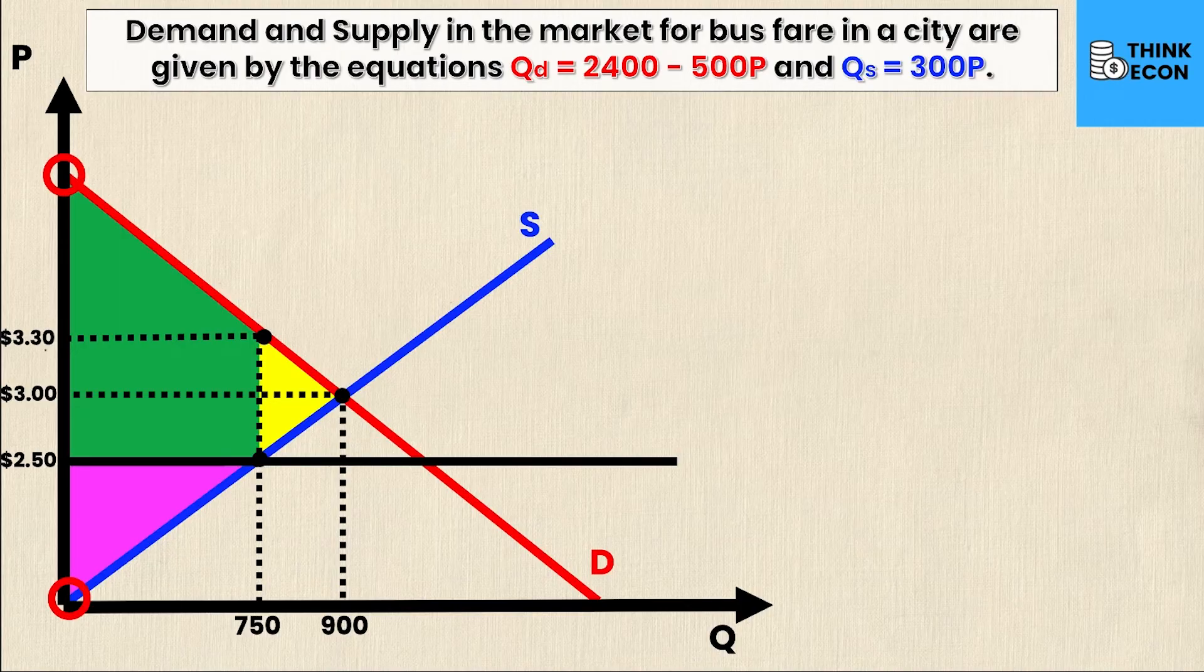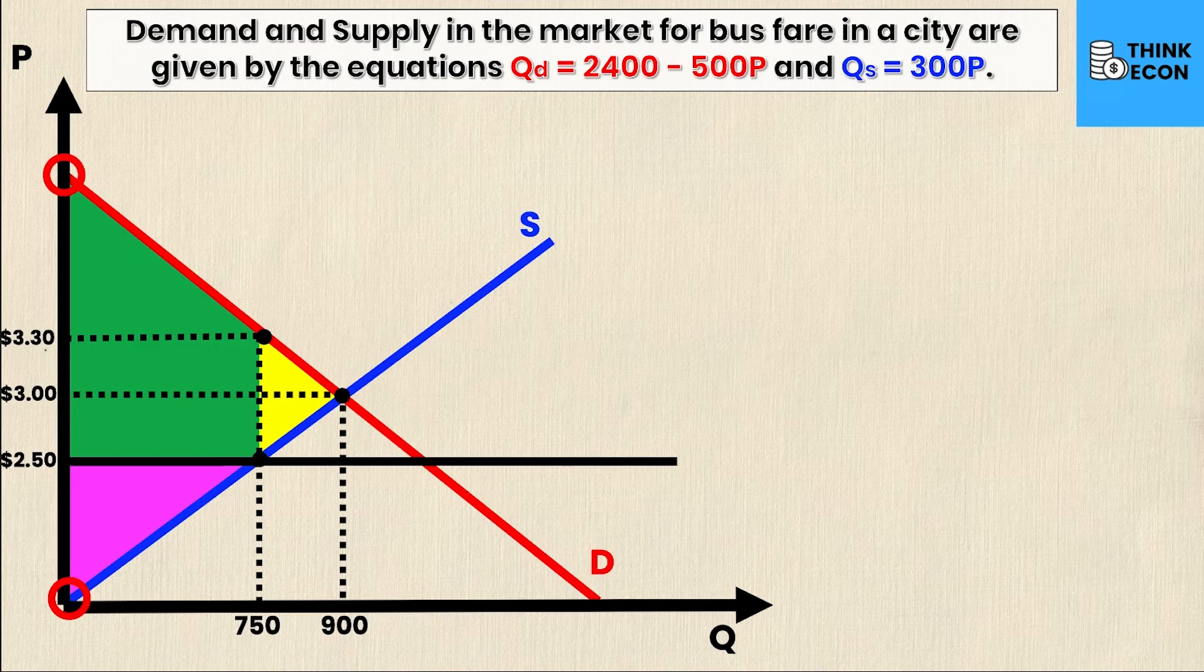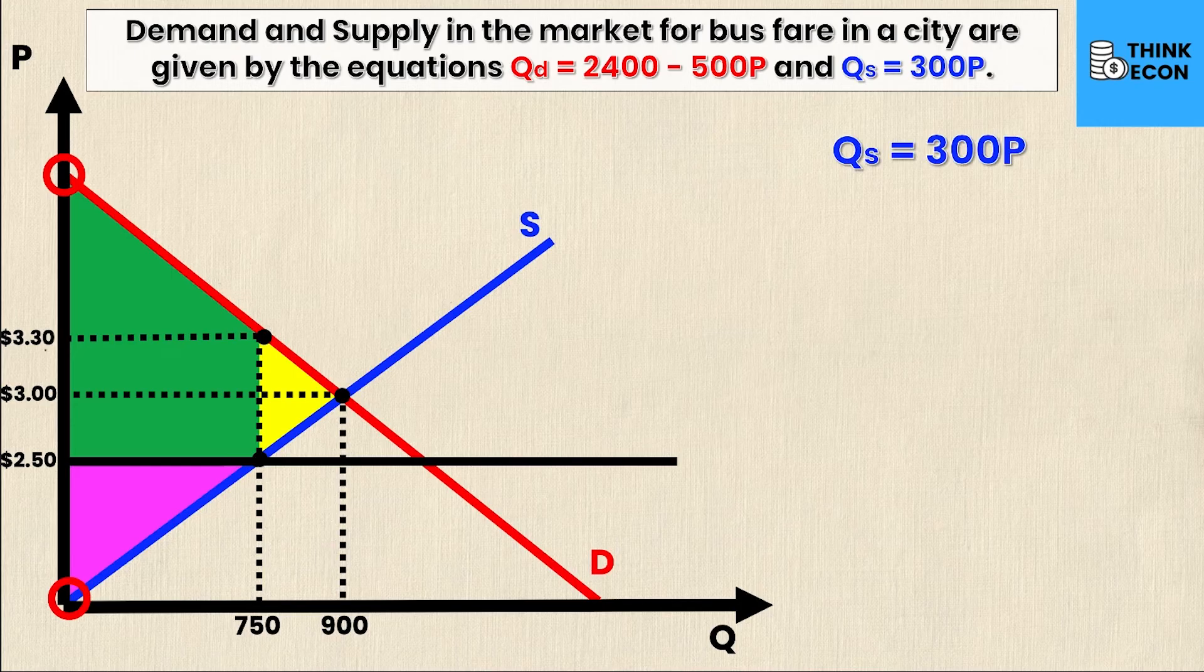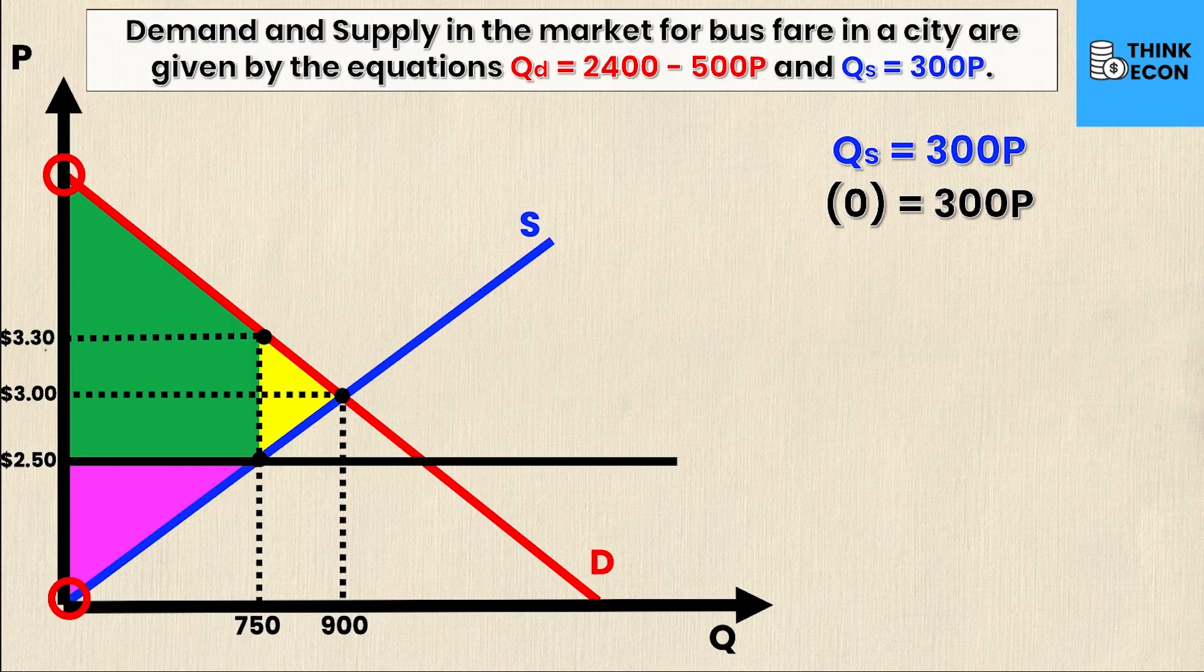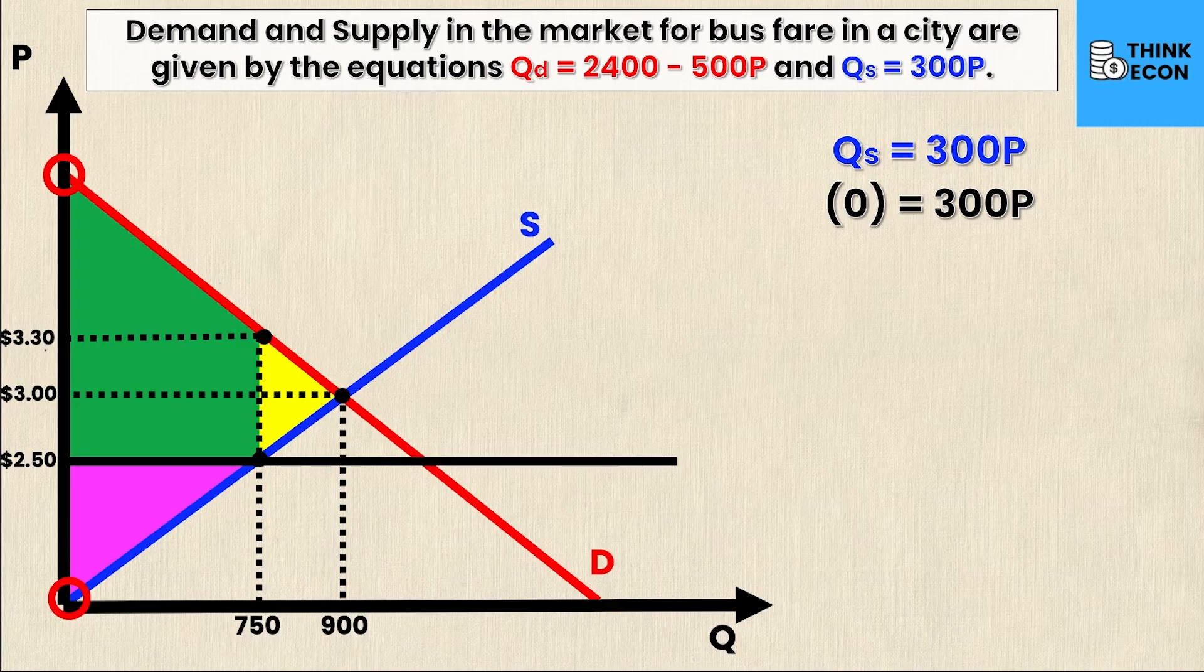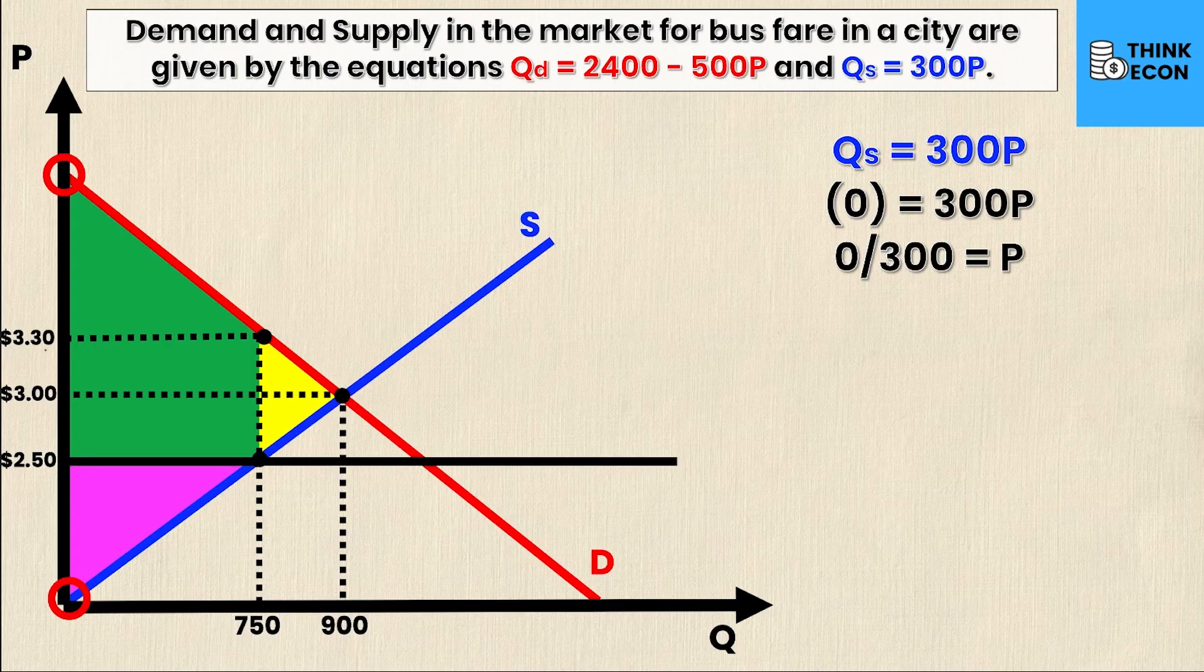To find these intercepts, we'll start with the supply curve. I want to know when the supply will intersect the p-axis, and I know that anywhere on that y-axis the q value must equal zero. So I'll take my equation Qs = 300P and substitute zero for my q value. So zero = 300P, rearranging I get zero divided by 300 equals P, and therefore price equals zero dollars.